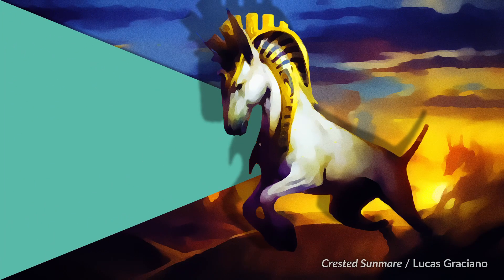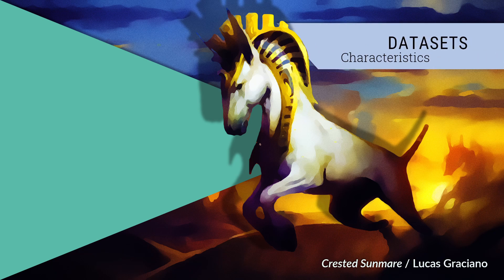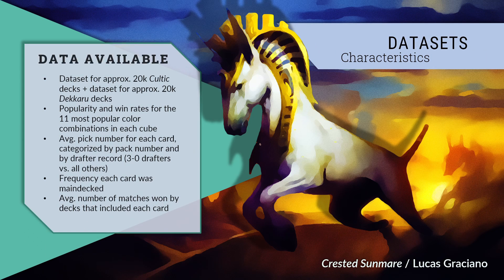So what exactly did WOTC give us? The scope of the data is, to me, awe-inspiring. We have information about approximately 20,000 decks for both Cultic and Deckeroo — that is about 40,000 decks total. We have metagame breakdowns that show the win rates of the 11 most popular color combinations, as well as their popularity and what percentage of the meta each comprises.